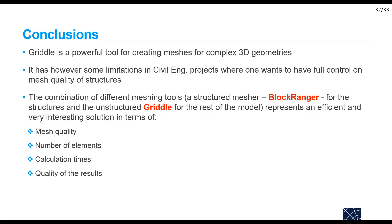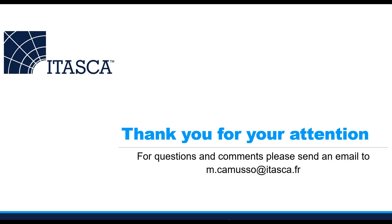In conclusion, Griddle is a powerful tool for creating meshes for complex 3D geometries, but it has limitations in civil engineering works where full control over the mesh for structures is needed. The combination of structured and unstructured meshing tools represents an efficient and interesting solution in terms of mesh quality, number of model elements, calculation time — particularly for hydromechanical calculations — and quality of results. Thank you for your attention; if you have any questions or comments, please send me an email.